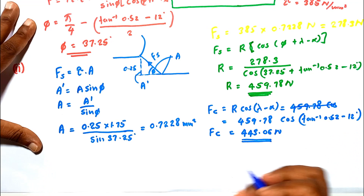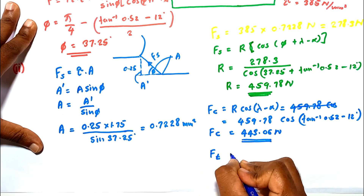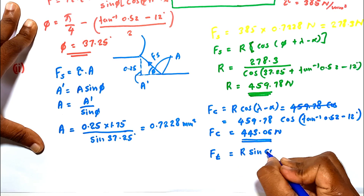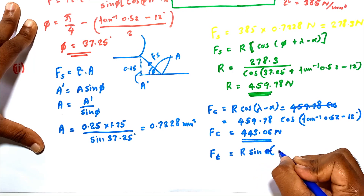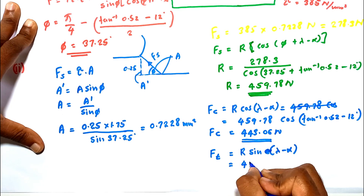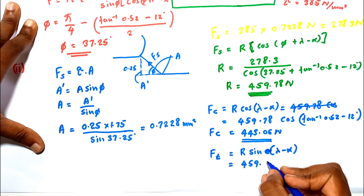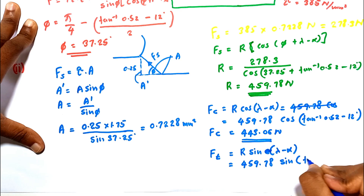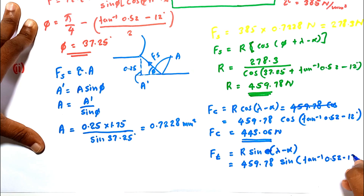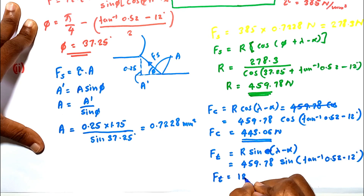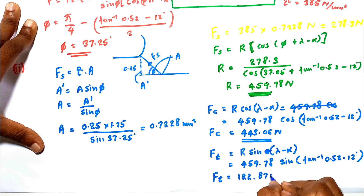In the same way, we can calculate the thrust force Ft. The equation is: Ft equals R times sine of (lambda minus alpha). Substituting R as 459.78 N, and (lambda minus alpha) using tan inverse of 0.52 minus 12 degrees, the thrust force Ft equals 122.87 newton.